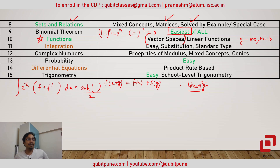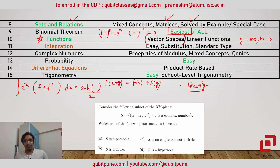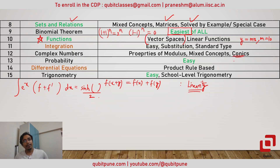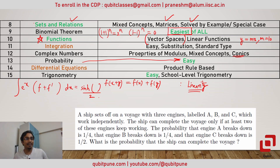Question number twelve was the only question based on complex numbers, specifically properties of the modulus of complex numbers. We were given two conditions and asked to decide the locus of complex numbers satisfying that property. The options included parabola, ellipse, and circle, so we also needed to know about conics. Then there was a probability question requiring knowledge of independent events and complementary probability — very easy, similar in level to the binomial theorem question. I was expecting a Bayes' theorem question but it didn't appear.